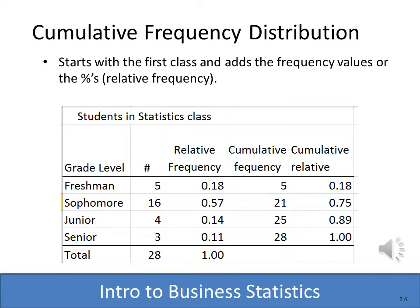In a cumulative relative frequency, we have 18% essentially of freshmen, and then we add that to the 57% of sophomores — we end up with 75% with those two together. We add juniors in, we have 89% of the class taken care of, and finally we add the seniors, and now we have 100% of the class represented on the frequency distribution.